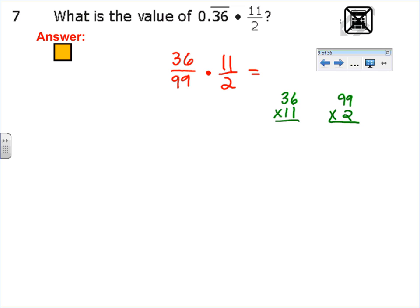You're going to have some big numbers going on. So what I would like to do is cross reduce. Since 2 goes into itself one time and it goes into 36 18 times, that's half of 36, because they're both even numbers, I can do that. The other thing I can do is, since 11 goes into itself one and 11 goes into 99 nine times, when I multiply across now, I'm going to get 18 times 1, which is 18 over 9.